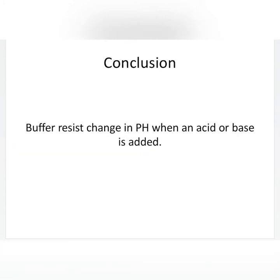We will see the initial pH of 0.1 M NaCl is 6.9, and by addition of HCl it will become 2.1 — the difference in pH is 4.8. The initial pH of 0.1 M buffer will be 8.82, and by adding HCl it will become 8.2 — the difference in pH will be 0.62.